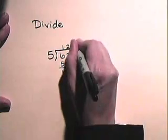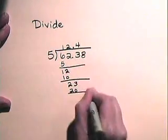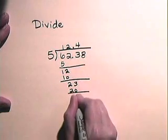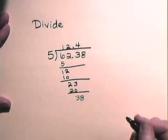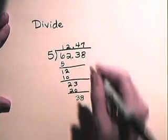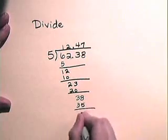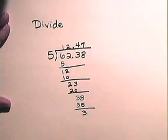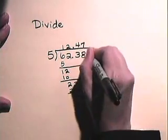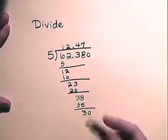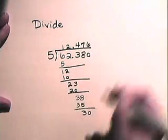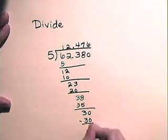5 divides into 23, 4 times. 4 times 5 is 20, we subtract, leaving us with a 3. We bring down the next number. 5 divides into 38, 7 times. 7 times 5 is 35, we subtract, leaving us with 3, and we continue to add zeros at the end of the number until we reach the desired accuracy place. 5 divides into 30, 6 times. 6 times 5 is 30, and our remainder is 0, and our division is complete.